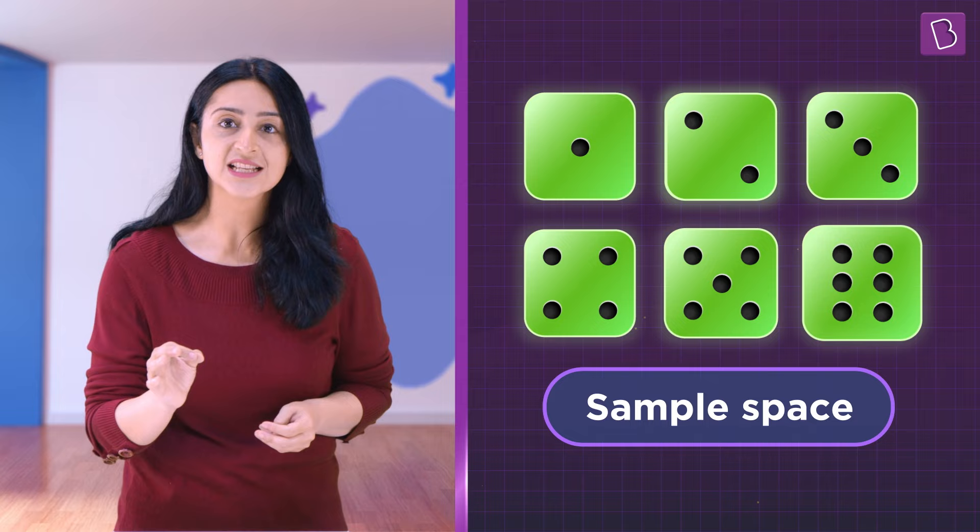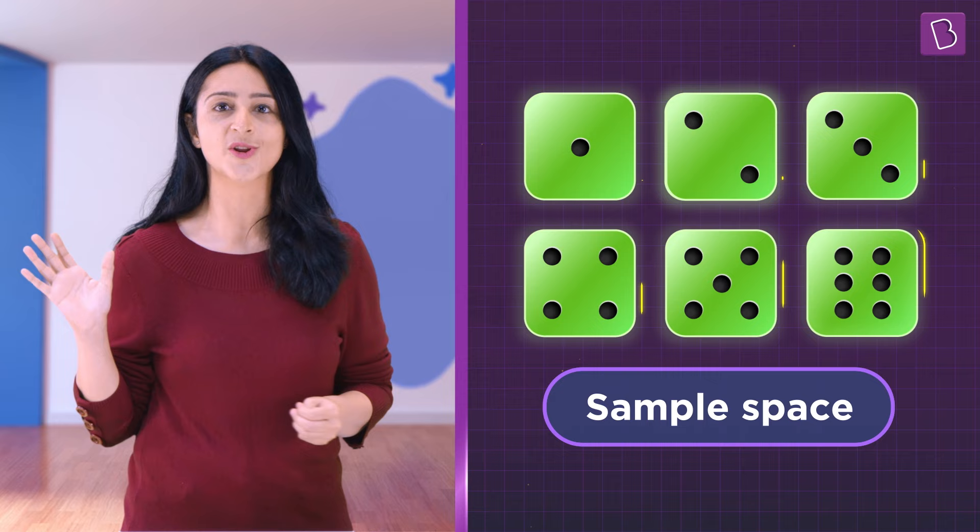So, there exists one out of six chances for us to get a number from one to six on a roll. For example, probability to get a two on a roll is one out of six, which is one by six.